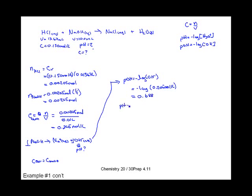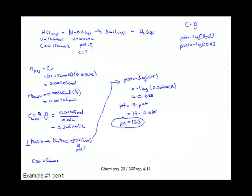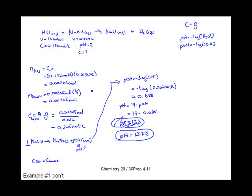Now we convert: pH = 14 − pOH = 14 − 0.688. So our final answer is 13.312. This should make sense for a base — we are dealing with a strong base, so it should have a very high pH. Remember, with pH, only the digits after the decimal are considered significant, so with three sig digs our answer is 13.312.